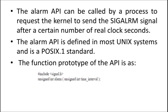When a particular number of real clock seconds have elapsed, the kernel will send a signal alarm signal to the process just to tell the process to wake up. The alarm API is defined in most Unix systems and the POSIX standard — it is a POSIX.1 standard.